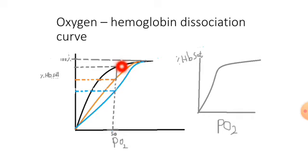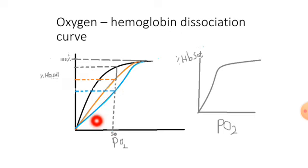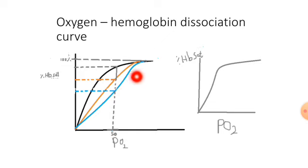A lower affinity means there will be release of oxygen from hemoglobin — it gives up oxygen more easily. When do we see this? We see it during exercise. During exercise, the muscles need oxygen. So the curve shifts to the right to allow release of oxygen. The factors causing this are: increased temperature and low pH — acidity. Low pH occurs when there is increased CO2, which happens during exercise.